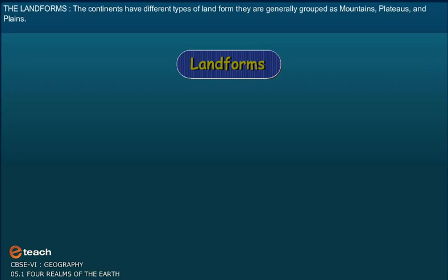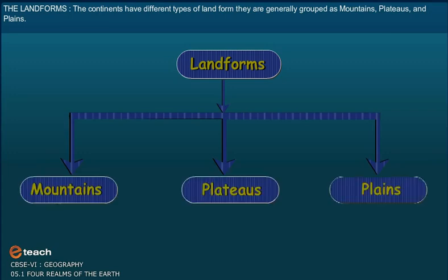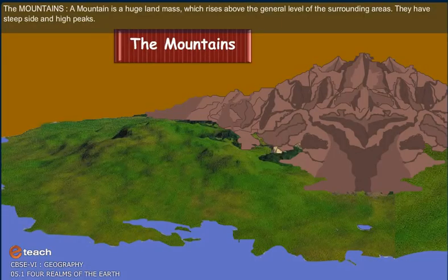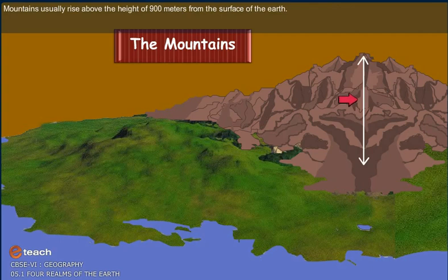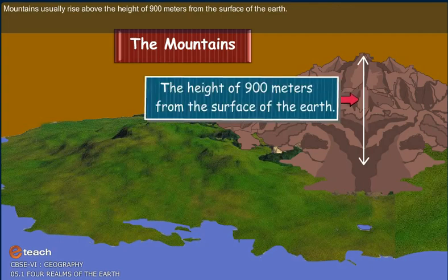The continents have different types of landforms. They are generally grouped as mountains, plateaus, and plains. Mountains are a huge land mass which rises above the general level of surrounding areas. They have steep sides and high peaks, usually rising above the height of 900 metres from the surface of the Earth.